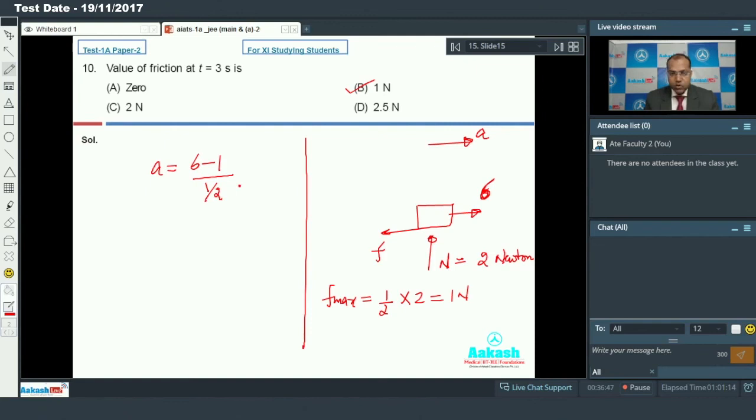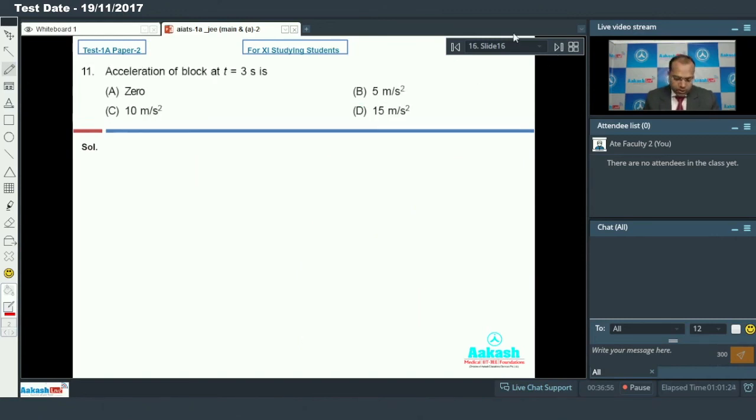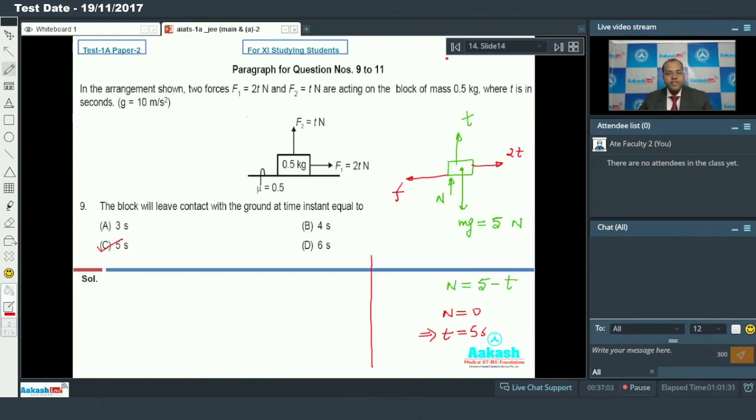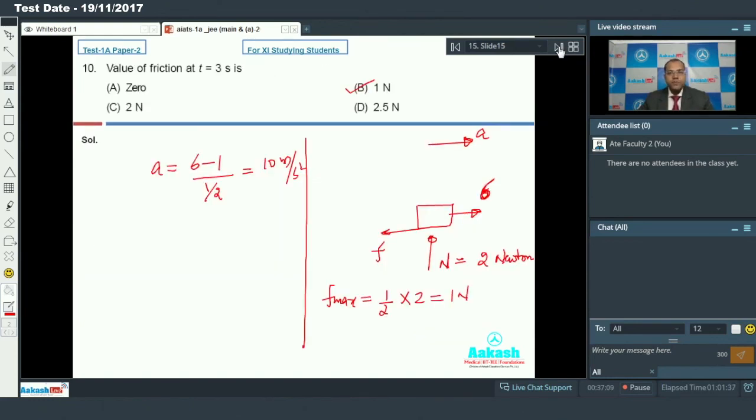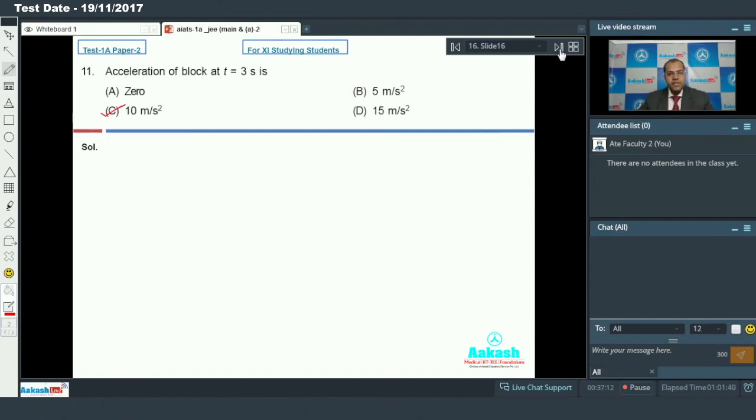Mass of block is 0.5 kilogram, so that will come out to be 10 meter per second square. So I can say that the answer will be option C. By this we can say that the answer of question number 9 is option C, question number 10 is option B, and question number 11 is option C.